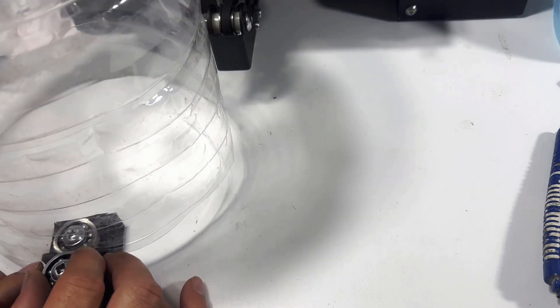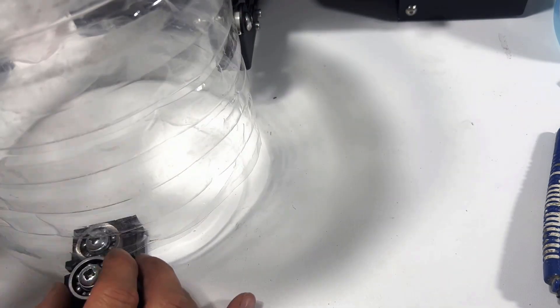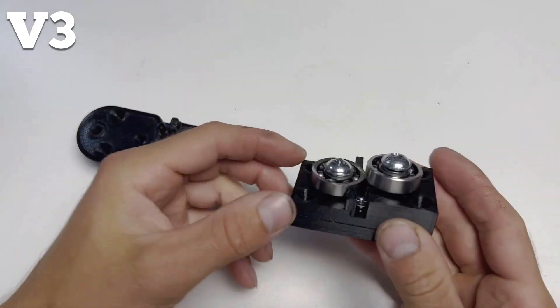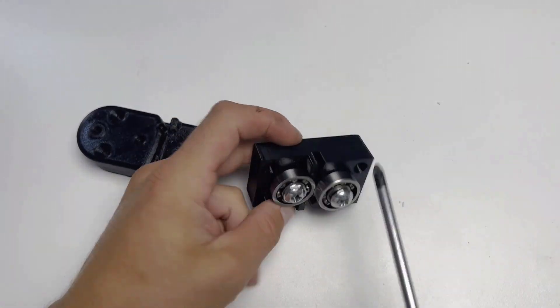The first test didn't go very well, further adjustments are needed. Hence, a third version was born, featuring a threaded rod to support the pet bottle.